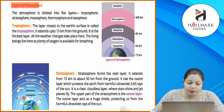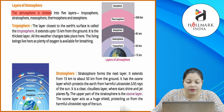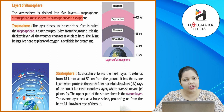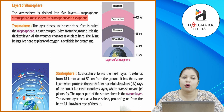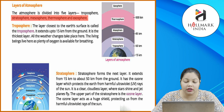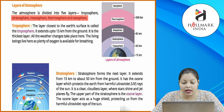Layers of atmosphere: the atmosphere is divided into five layers — troposphere, stratosphere, mesosphere, thermosphere, and exosphere. Atmosphere ke layers ko humne five layers mein divide kiya hua hai: pehla hai troposphere, doosra stratosphere, teesra mesosphere, fourth thermosphere, aur last exosphere.